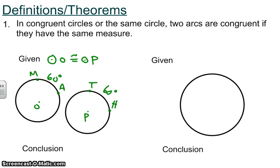So because we are given that circle O is congruent to circle P, we can conclude that since they are congruent circles, we can say that arc MA is going to be congruent to arc TH. Very similar on one triangle.